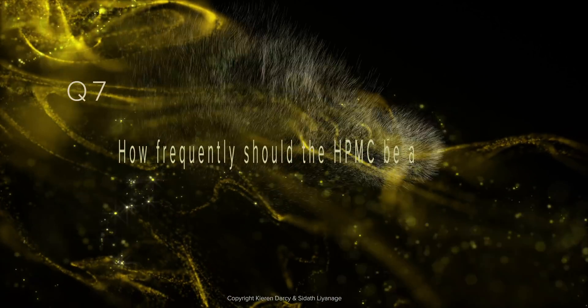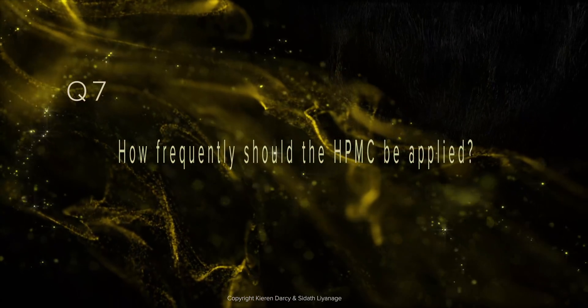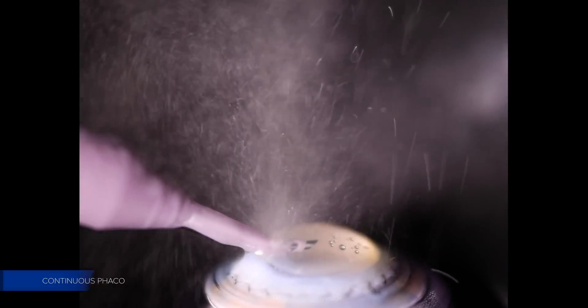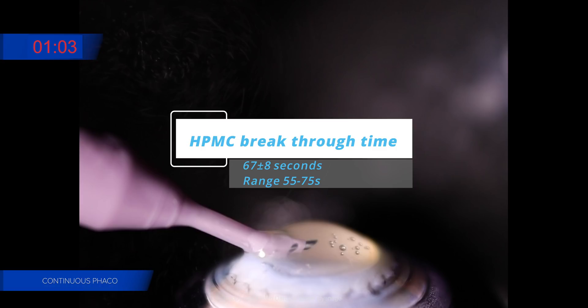Question 7: How frequently should the HPMC be applied? Repeated timing exercises confirmed the HPMC breakthrough time averaged 67 seconds, with a standard deviation of 8 seconds.